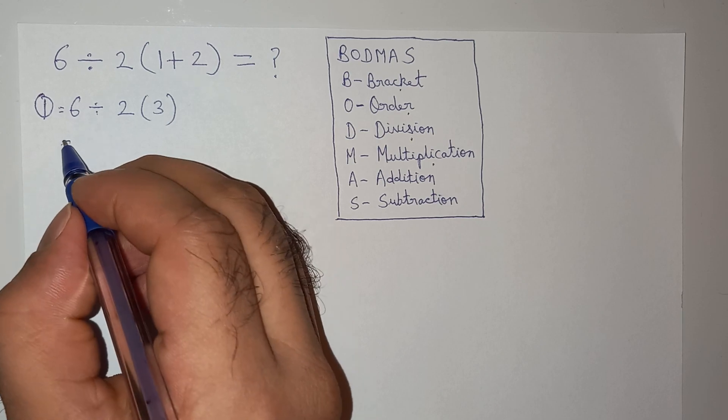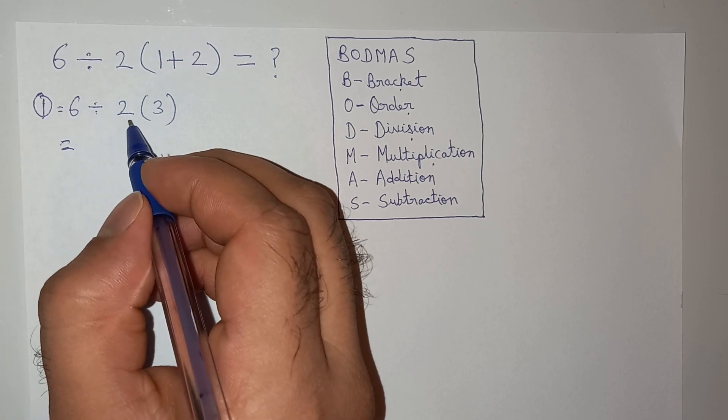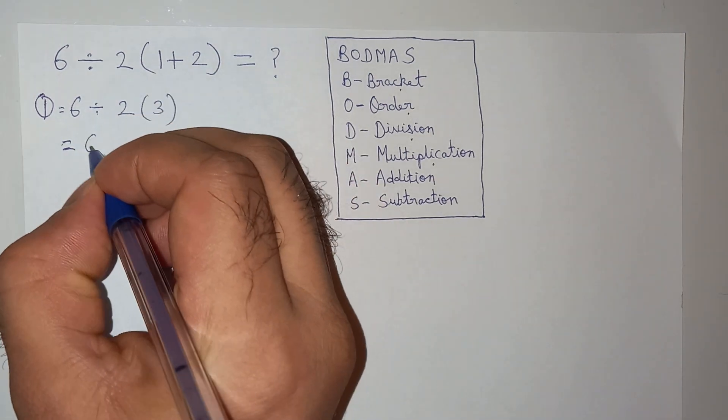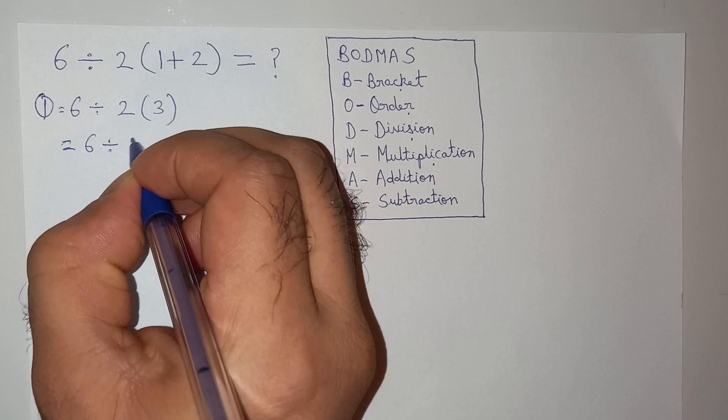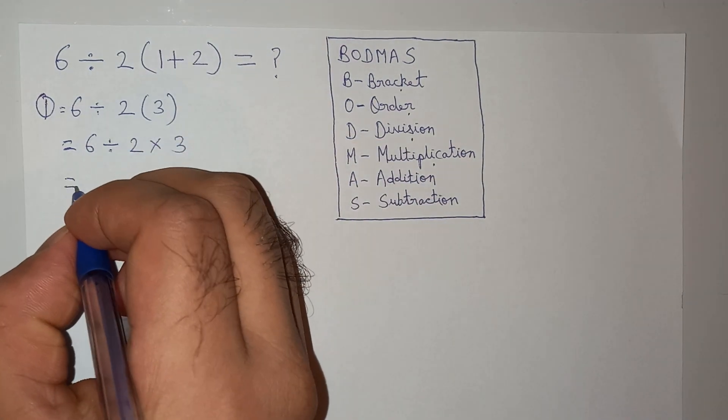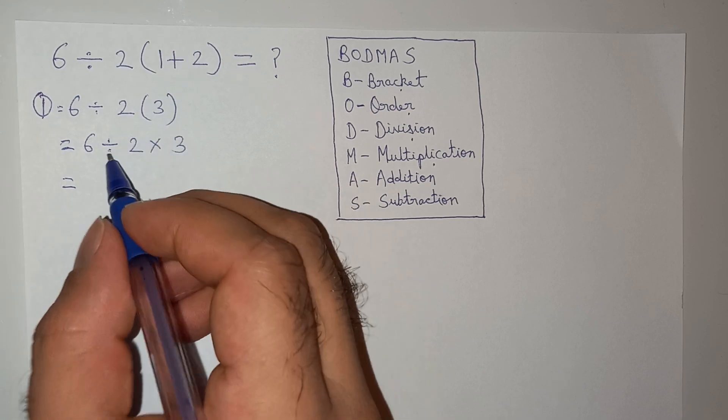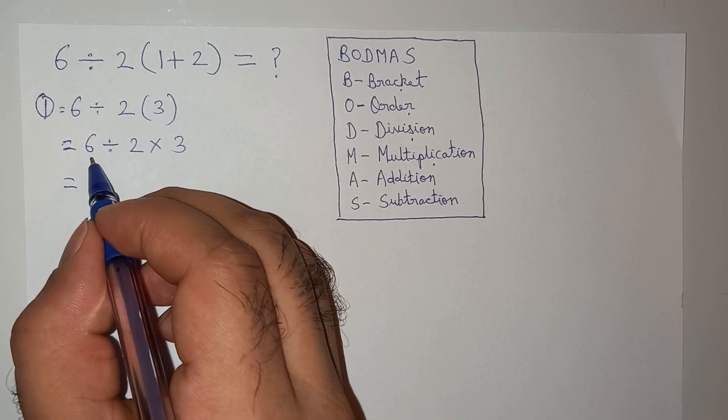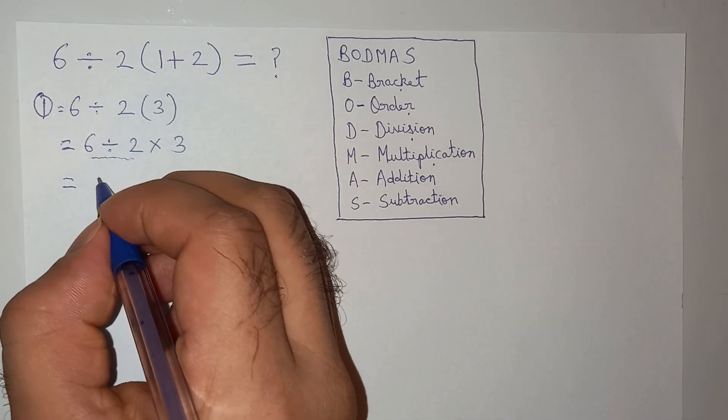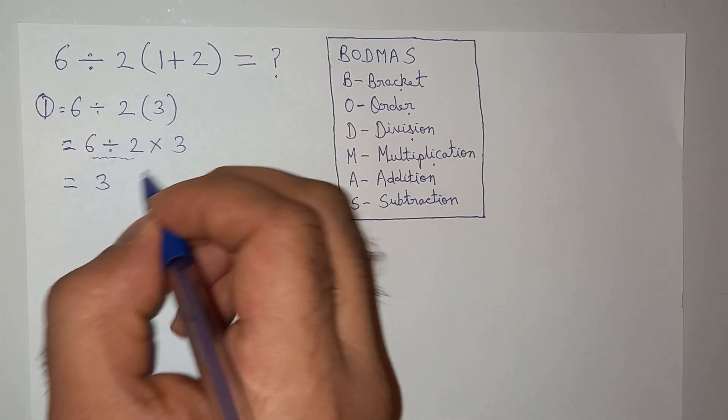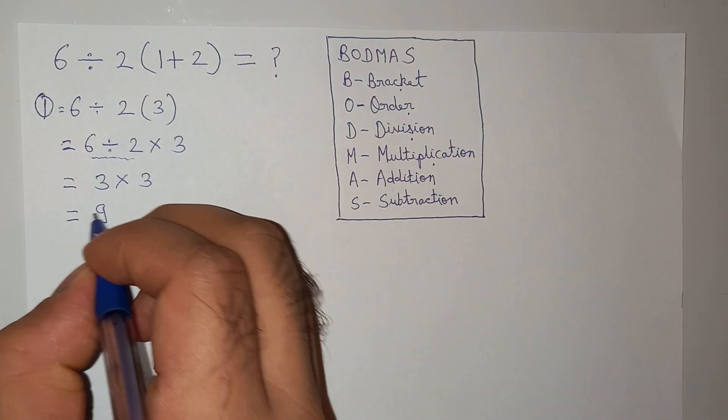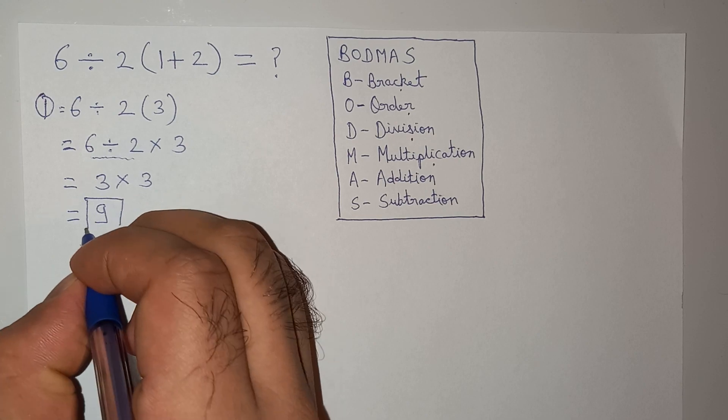Now if you calculate this in Google or a calculator, this will be written as 6 ÷ 2 × 3. As per BODMAS, we have to first divide this expression. 6 ÷ 2 = 3, and then we multiply by 3, so the answer comes to be 9.